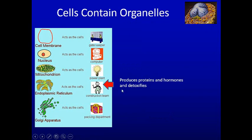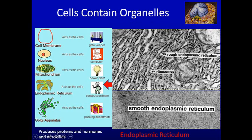The rough endoplasmic reticulum is the construction team. The smooth endoplasmic reticulum is associated with detoxification. On the rough ER, you see lamellar structures with ribosomes on the surface — that's what makes it rough. Ribosomes make protein from messenger RNA and transfer RNA. Smooth endoplasmic reticulum in the liver detoxifies things. So there are different types: rough ER with ribosomes, and smooth ER without ribosomes.